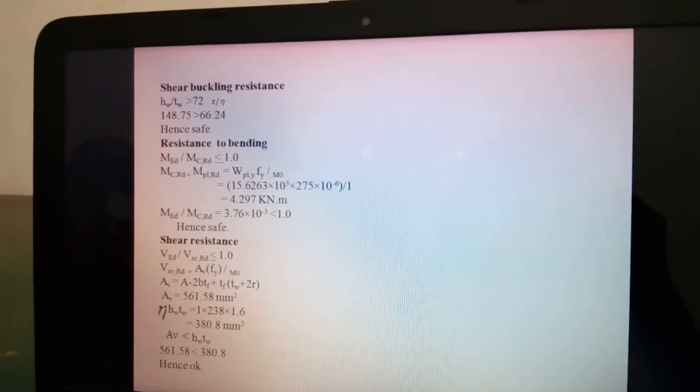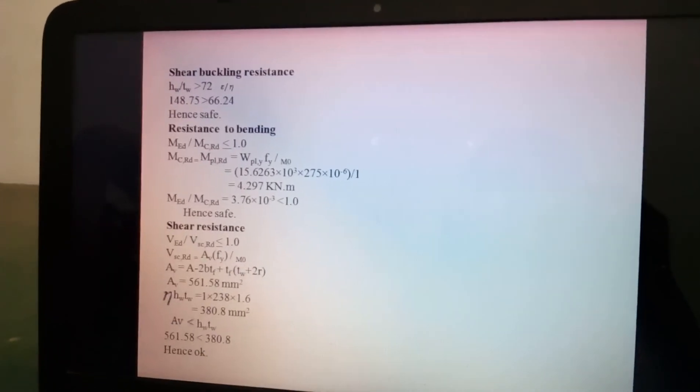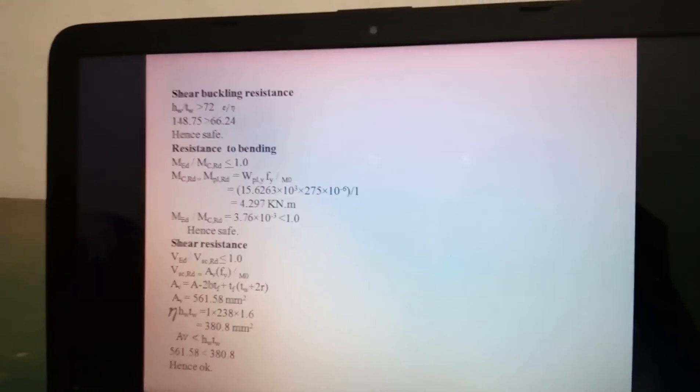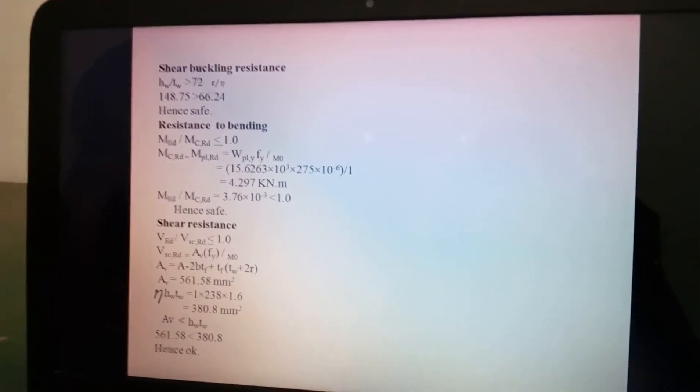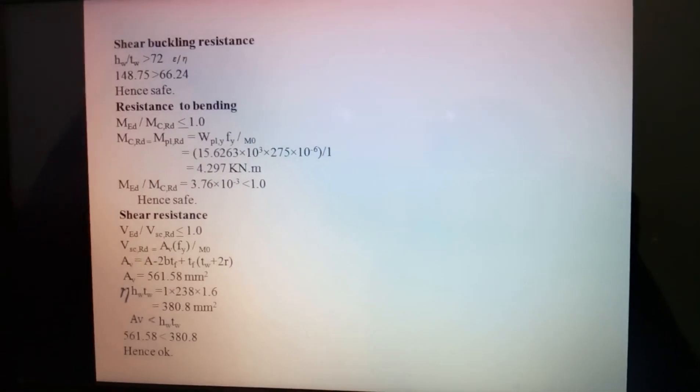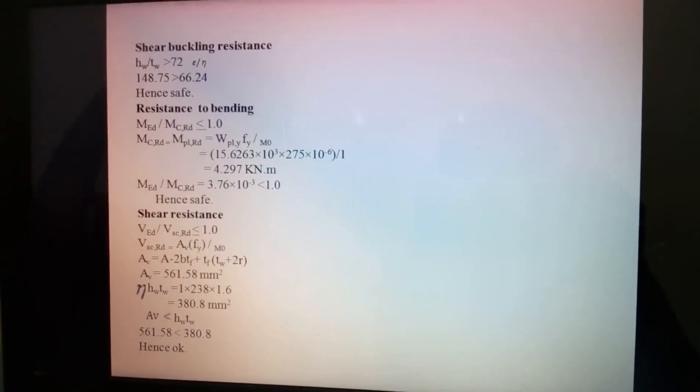Shear buckling resistance. Here height by thickness is safe which is greater than 72 epsilon, which is safe.